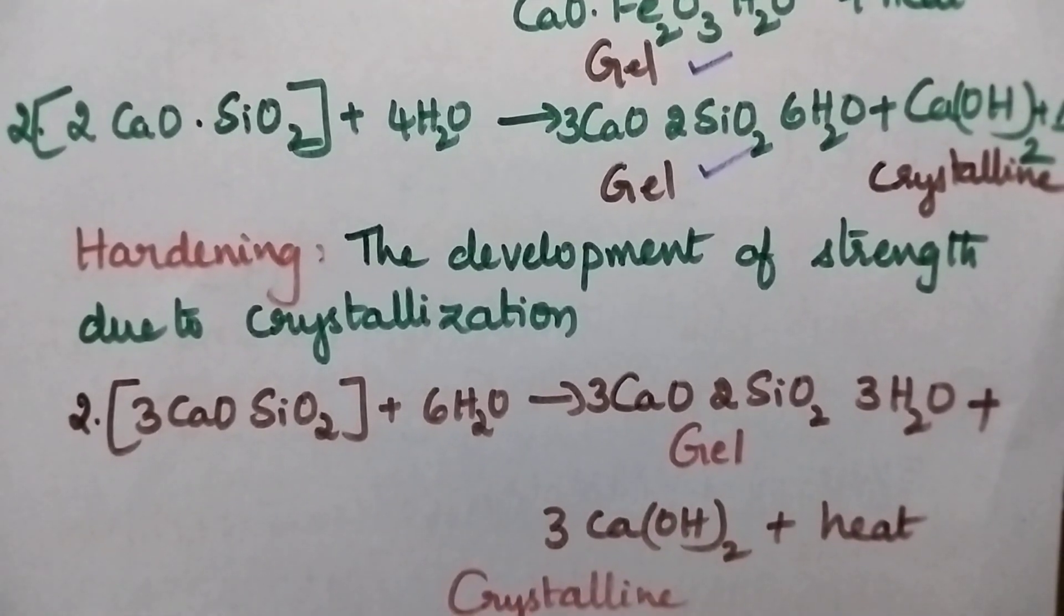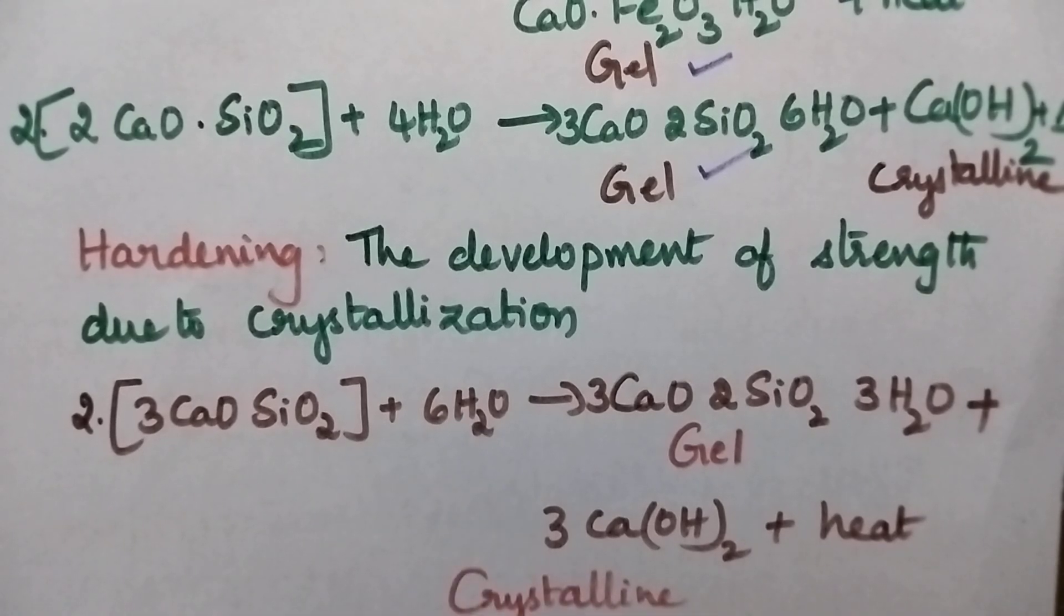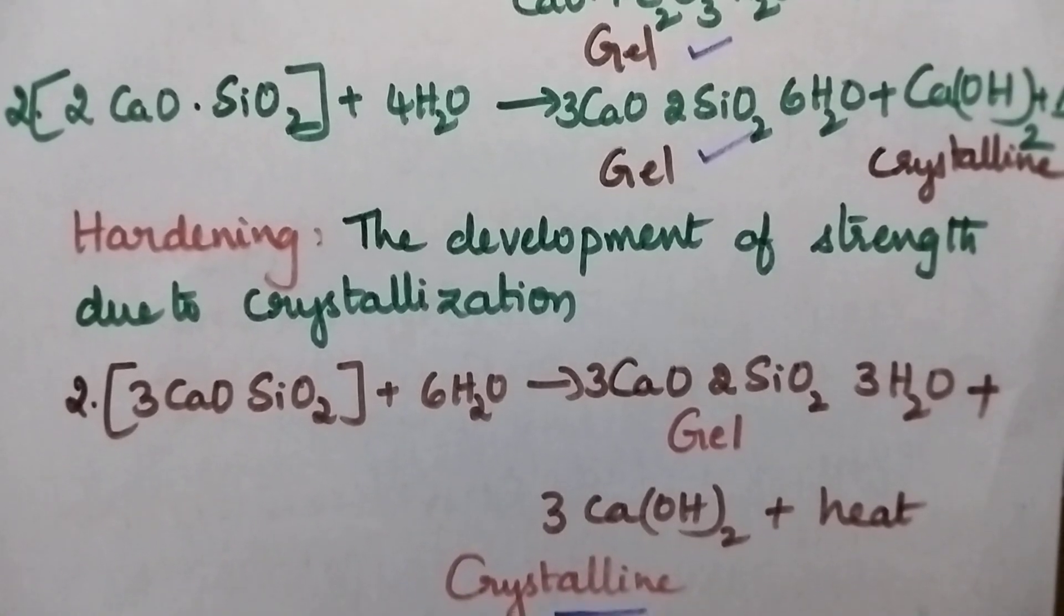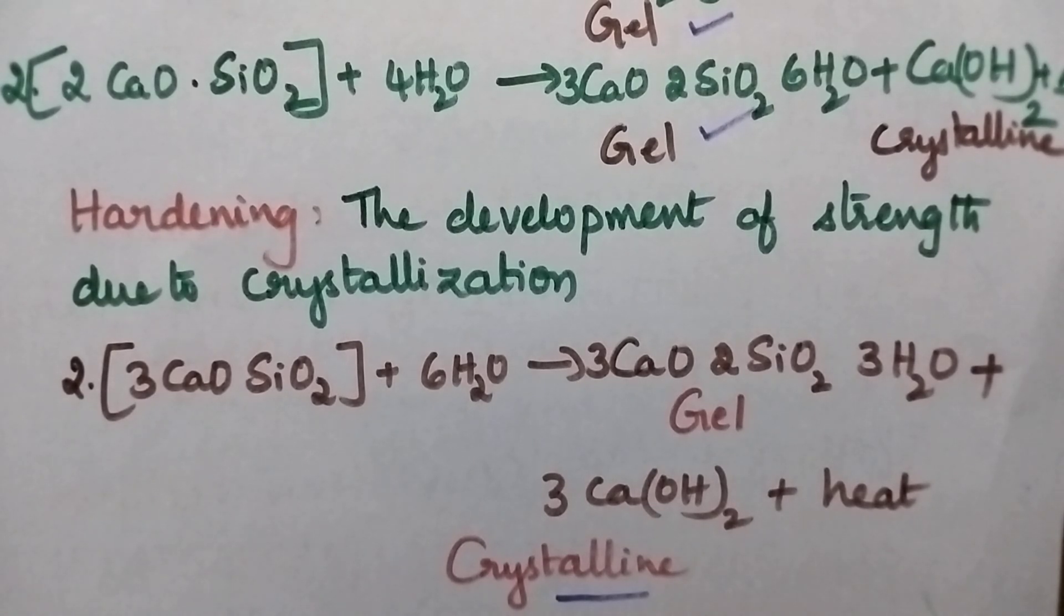So whenever we consider calcium silicate, it undergoes hydrolysis, which results in the formation of crystalline substance, and hence it is finally responsible for the formation of stiff and rocky mass.